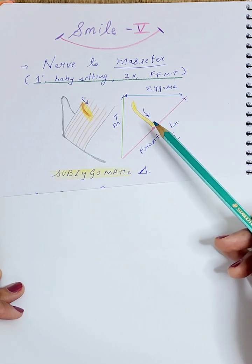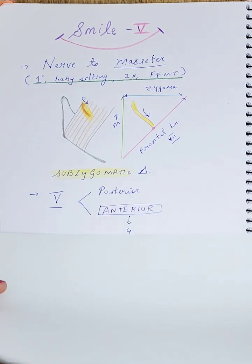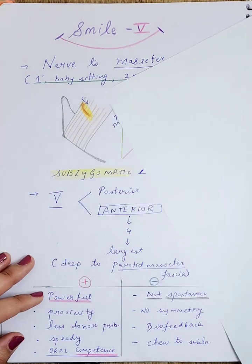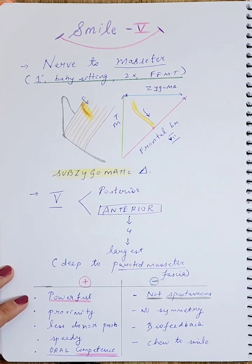What are the advantages and disadvantages of this nerve? This nerve has many advantages - it is very powerful. Studies have shown that the number of axons available in the nerve to masseter are far more than those available in the obturator nerve for the gracilis, as well as the terminal branches of the facial nerve.